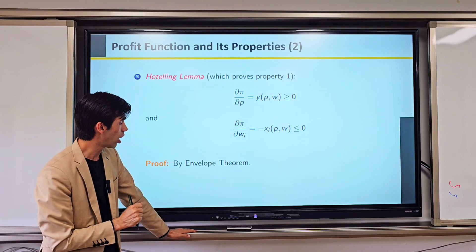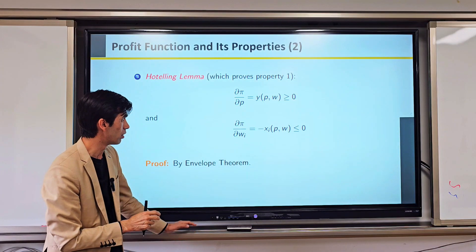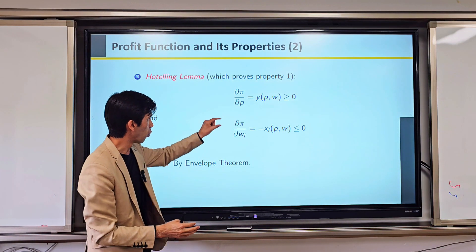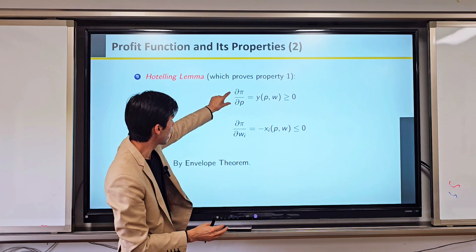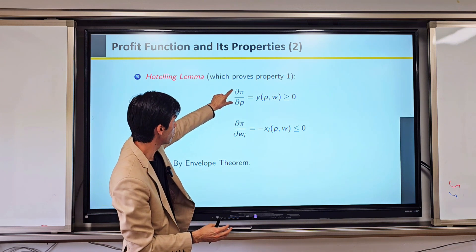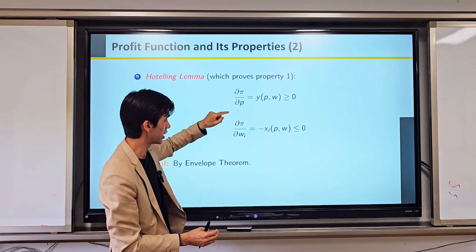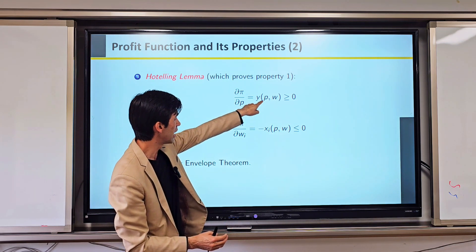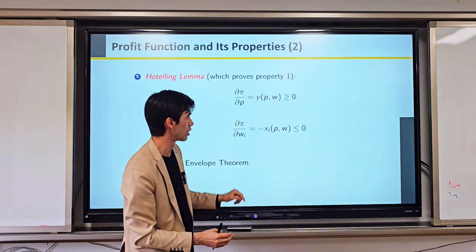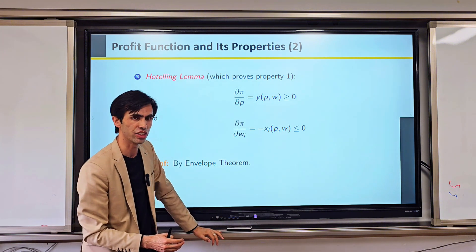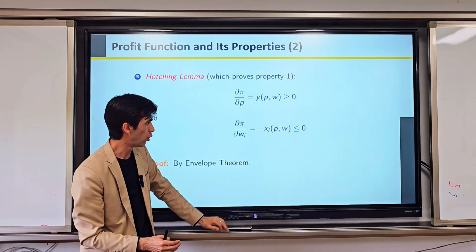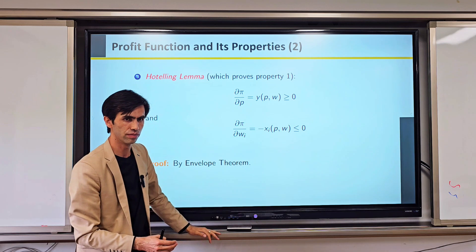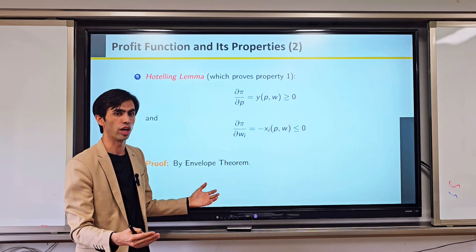What does Hotelling's Lemma provide to us? When we take a partial derivative of the profit function with respect to price, it will give us the value of our supply function, which is greater than or equal to zero — meaning it's a positive amount.